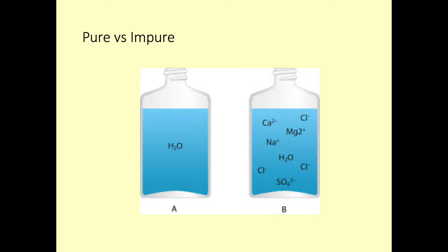Coming back to distilled versus seawater: distilled water is pure water — it only contains H₂O. Whereas seawater, as well as potentially having some sand in it, has lots of minerals dissolved in it — sodium, calcium, chloride, magnesium, sulfate — all these different ions dissolved in the water. So seawater is not pure because there is a mixture of different substances present.